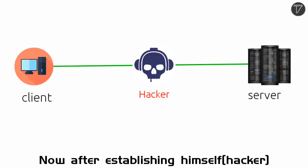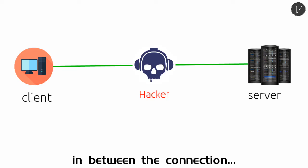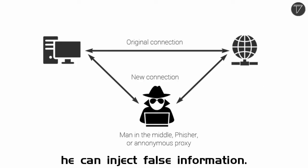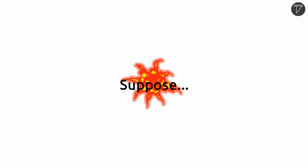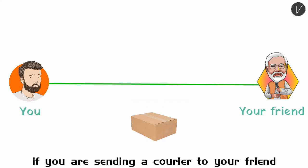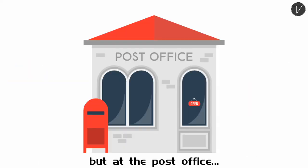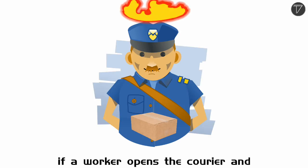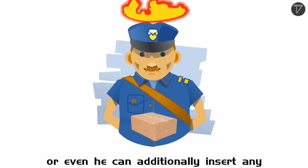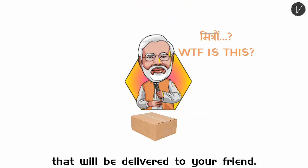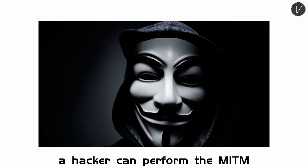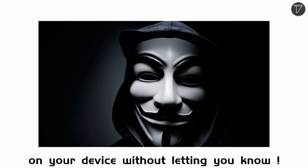After establishing himself in between the connection, he can even inject false information. For example, suppose you are sending a courier to your friend via speed post, but at the post office a worker opens the courier and exchanges it with another item, or even inserts undesired items inside the courier package that will be delivered to your friend. Like that, a hacker can perform a man-in-the-middle attack on your device without letting you know.